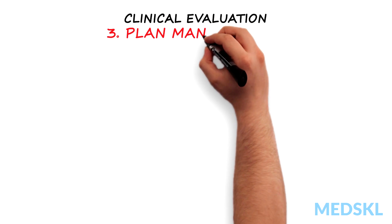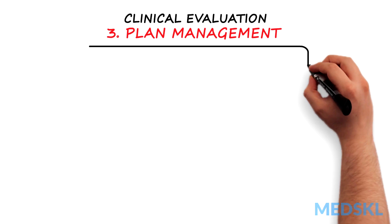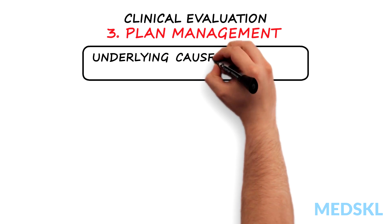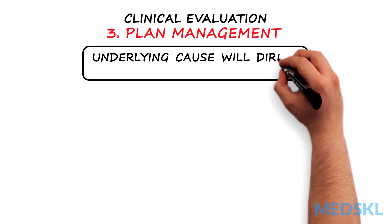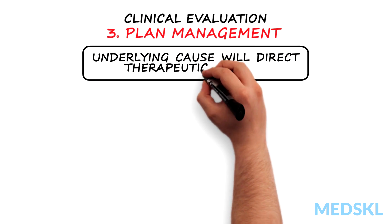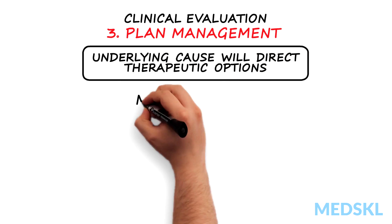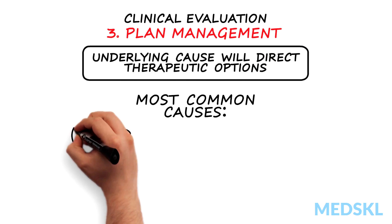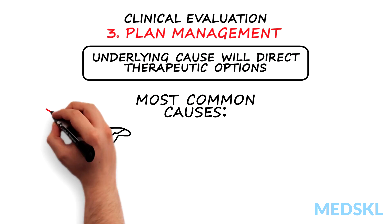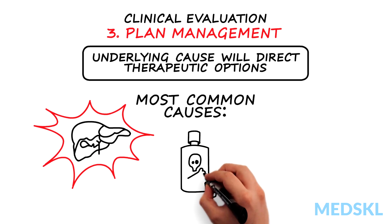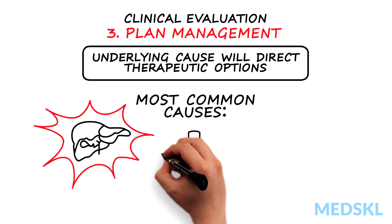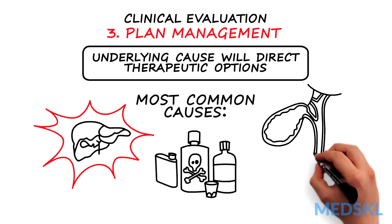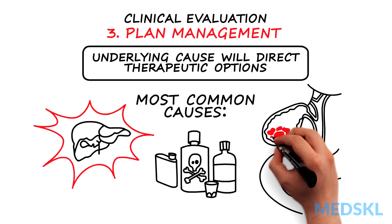Third, plan management. Determining the underlying cause of the jaundice will help direct you to the most appropriate therapy. The most common causes of jaundice are liver infections, liver insults secondary to alcohol and toxins, and obstruction due to gallstones.